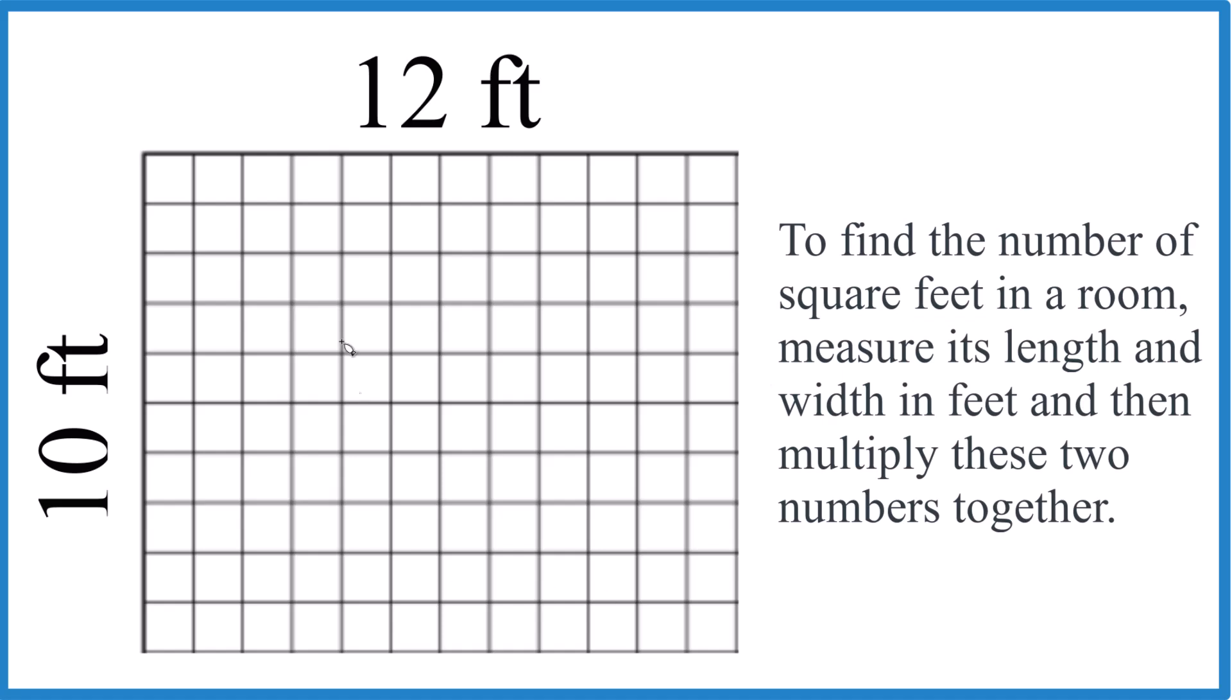If you take a look at my graph paper here, if you count up these lines and you go all the way across, there are 12 here and if you go down there are 10 here. So each one of the blocks is one foot by one foot, so it ends up being one square foot.